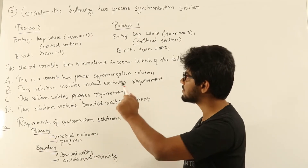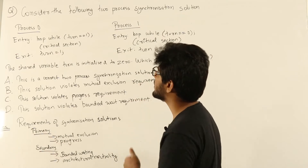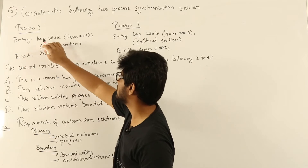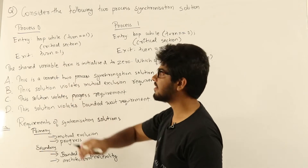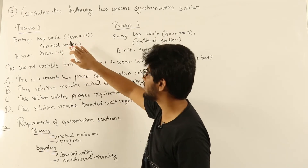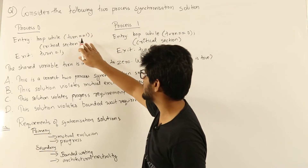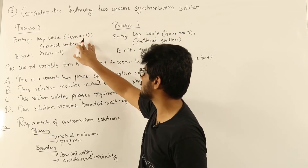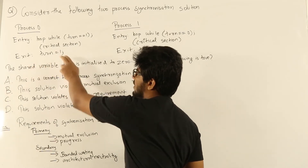Let's see if our solution satisfies these two conditions. The entry condition for process 0 is: loop while turn equals 1. So turn is a shared variable. If turn is 1, process 0 won't be able to enter the critical section. But if turn is not 1, process 0 will enter the critical section because the condition returns false, it exits the loop, executes the critical section, and after exiting it sets turn equal to 1.